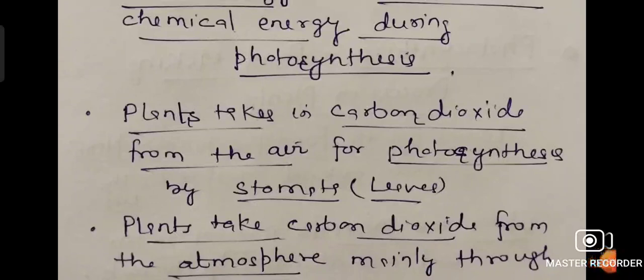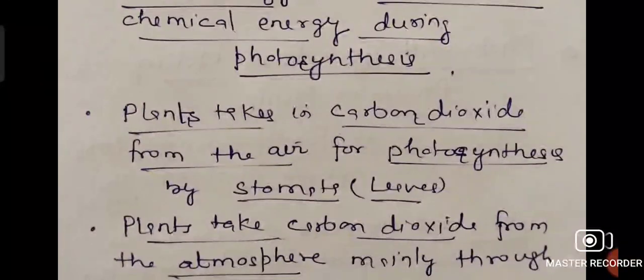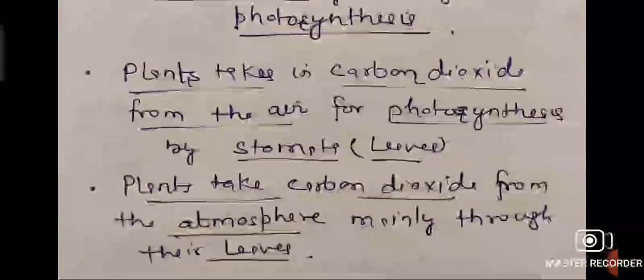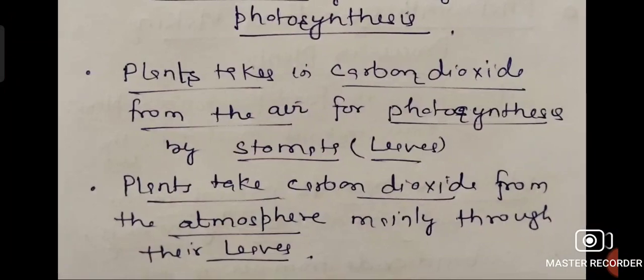The plant takes carbon dioxide from the air for photosynthesis. How do they take carbon dioxide from the air? They take carbon dioxide from the atmosphere, mainly through their leaves.